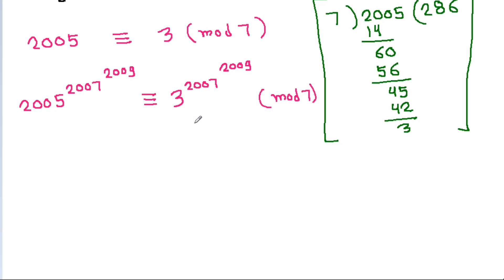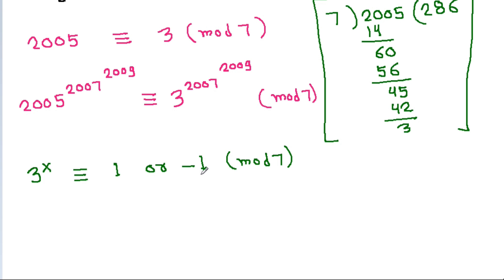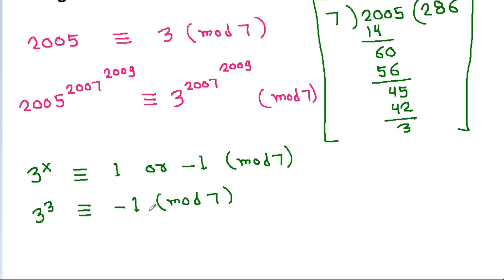Now we need to find any x such that 3^x ≡ 1 or -1 mod 7, because it is easier to work with 1 and -1 instead of 3. We can see that 3^3 = 27, which is equivalent to -1 mod 7. Squaring both sides gives 3^6 ≡ 1 mod 7.